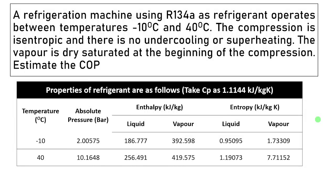A refrigeration machine using R134A as a refrigerant operates between temperatures minus 10 degree centigrade and 40 degree centigrade. The compression is isentropic and there is no undercooling or superheating. The vapor is dry saturated at the beginning of the compression. Estimate the COP. This is the question and the properties table is given along with the CP value.